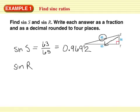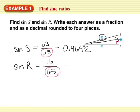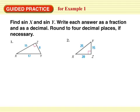Sine of R, we do opposite over hypotenuse, which is 16 over 65. Notice 65 is in the bottom both times because it's your hypotenuse. I can't simplify that any, but I can do the decimal, four decimal places.